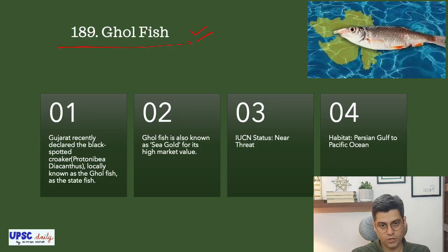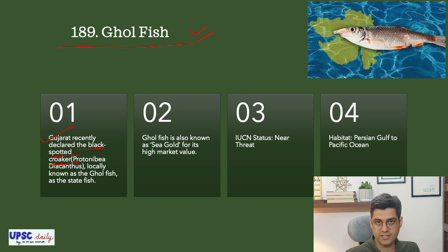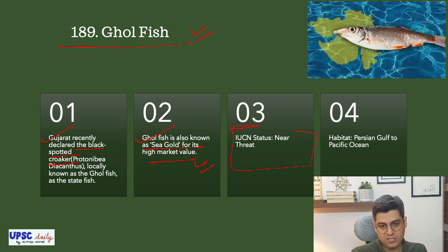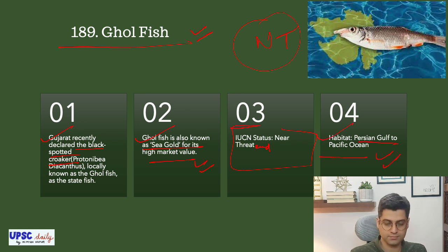The next species is Gholfish. Gujarat has recently declared the black-spotted croaker, locally known as Gholfish, as its state fish. Gholfish is also known as sea gold for its high market value. IUCN status is near-threatened. Habitat: Persian Gulf to the Pacific Ocean.